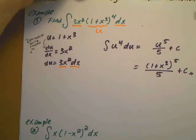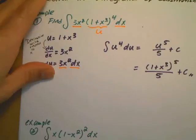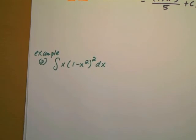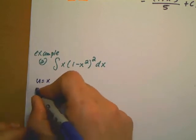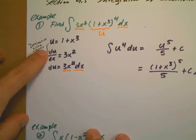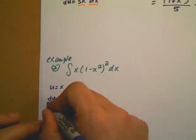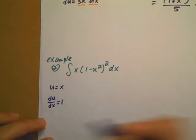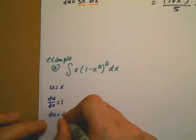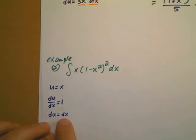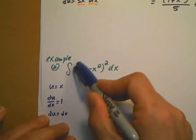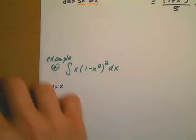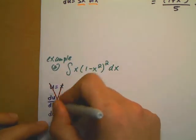Let me go through another example and further explain the inside-outside concept. In this example, I'm going to incorrectly pick the inside part first. Suppose I let u equal x. The derivative du/dx equals 1, so du equals dx. That accounts for the dx, but I haven't accounted for the parentheses being squared — so this is an incorrect selection.